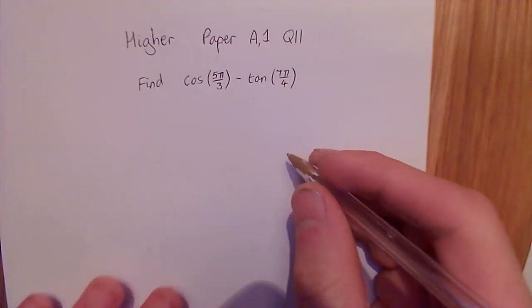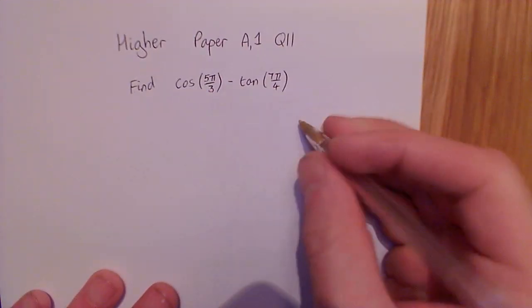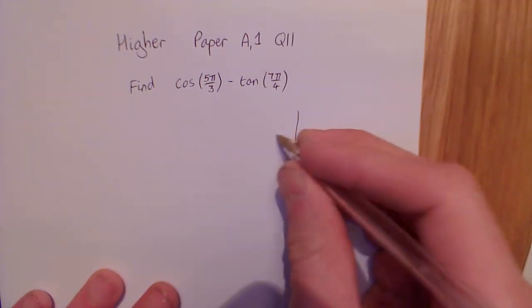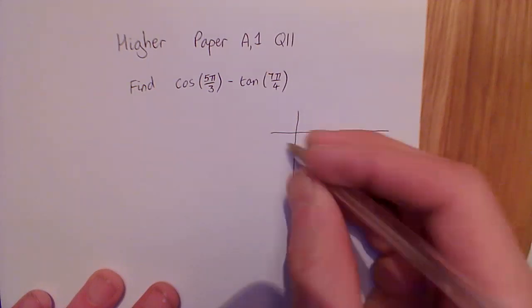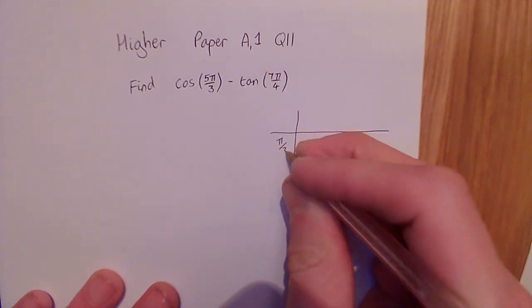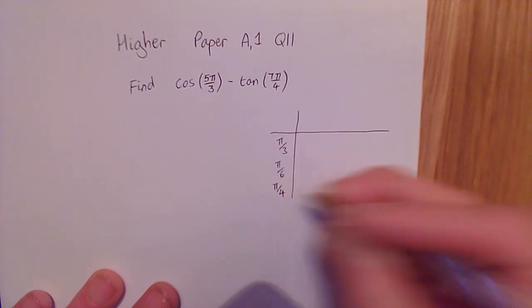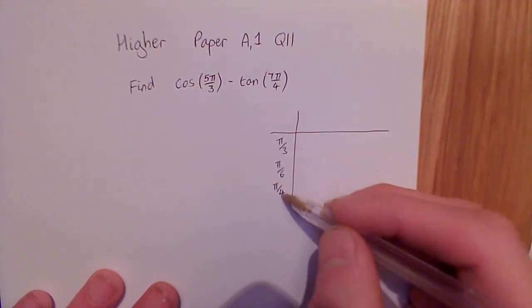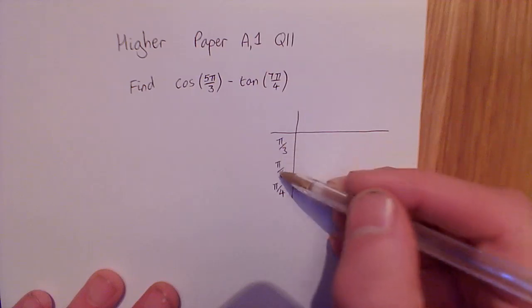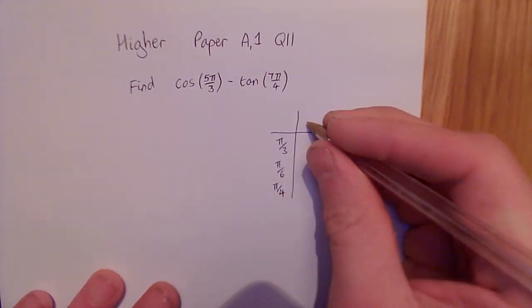The very first thing, if you're answering a question like this, is you need a table of exact values. I know some of you wrote this down in degrees, but here we're needing it in radians. So the key angles are π/3, π/6, and π/4, otherwise known as 60 degrees, 30 degrees, and 45 degrees.